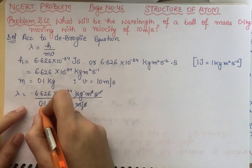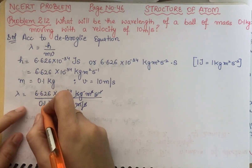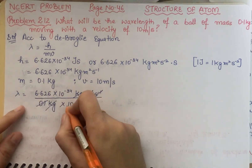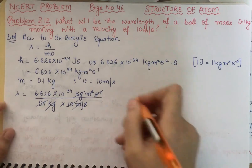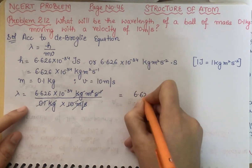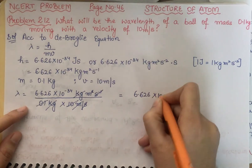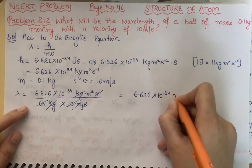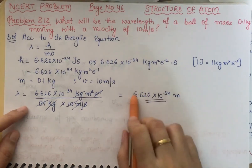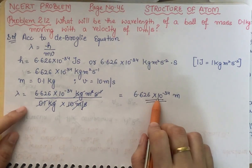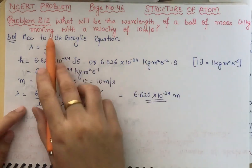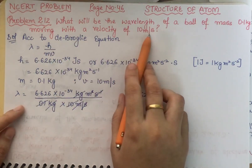Since 0.1 means 1 by 10, it cancels with the 10 in the denominator. So the final answer is lambda equals 6.626 into 10 raised to power minus 34 meter. This is the wavelength observed when a ball of mass 0.1 kg moves with a velocity of 10 meter per second.